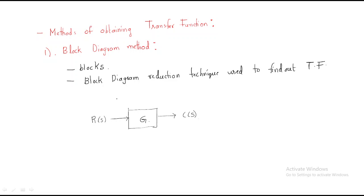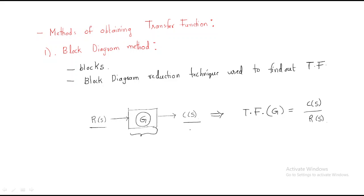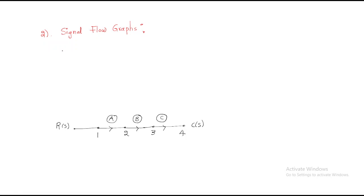Sometimes a question is given in terms of blocks — with an input, output, and transfer function represented within the blocks. By using the block diagram reduction techniques we can find out the transfer function directly. This transfer function is nothing but G(s), where the output is C(s) and the input is R(s). There are many problems available to understand the block diagram method and the transfer function.